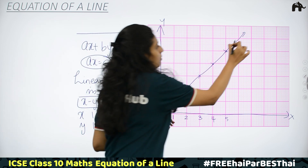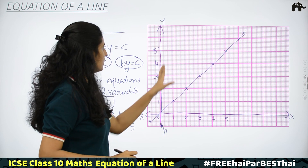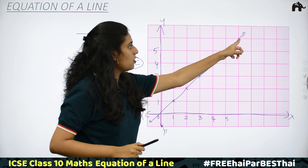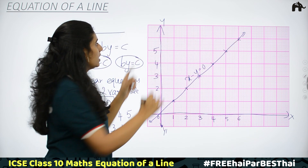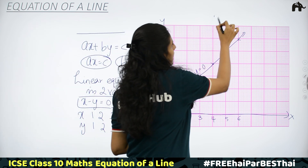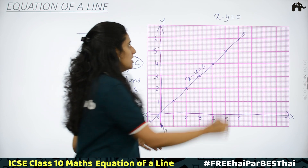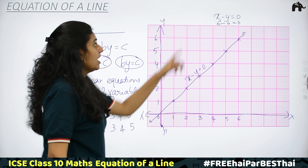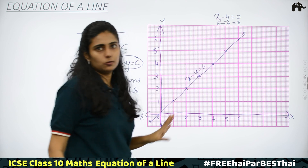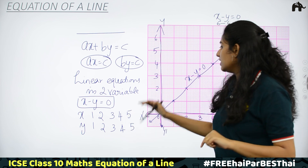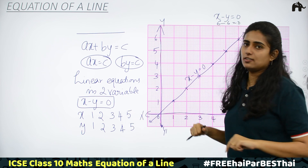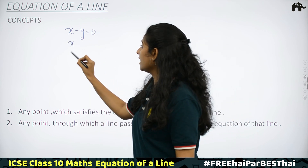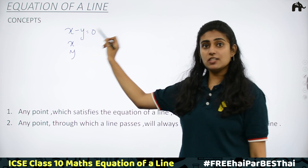We understood that if an equation of a line is given, substituting values which satisfy the equation gives us coordinates of points which lie on the straight line. Let me check a point that lies on the line. For the point (6, 6), our equation is X minus Y equal to 0. Substituting: 6 minus 6 equals 0. So any point on this line has equal X and Y values, and subtracting Y from X gives 0.